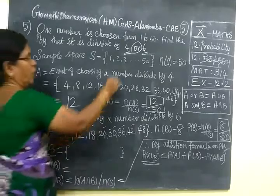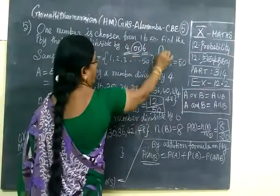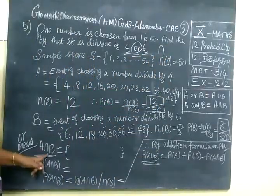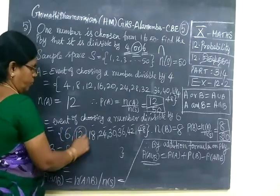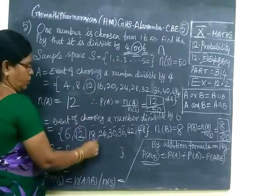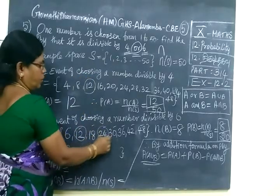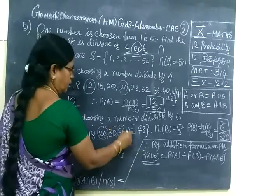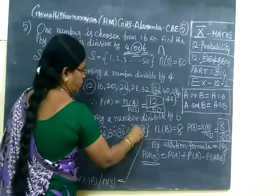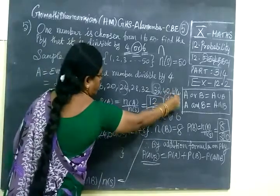Next step. I told you OR means you have to find intersection. So A intersection B. Find the common property. So 12, here also 12. Then 24, 24. Then 36, here also 36. Then 48, 48.